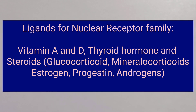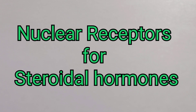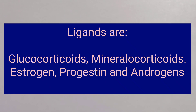The nuclear receptor family recognizes ligands such as vitamin A, vitamin D and other hormonal substances such as corticosteroids, sex hormones and thyroid hormones. The main category of nuclear receptors belongs to steroidal hormones such as glucocorticoids, mineralocorticoids, estrogen, progesterone and androgens.